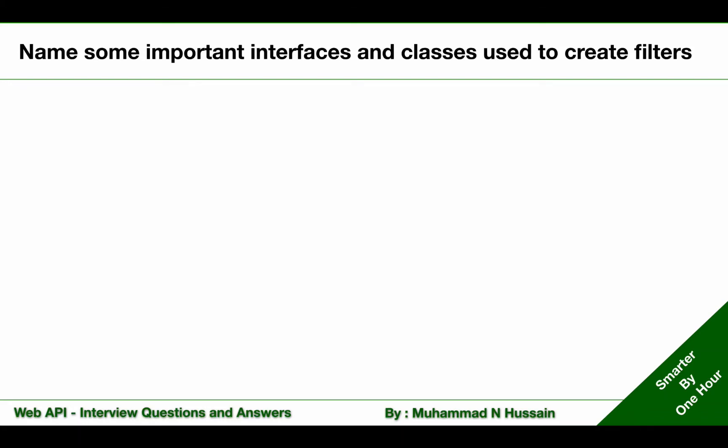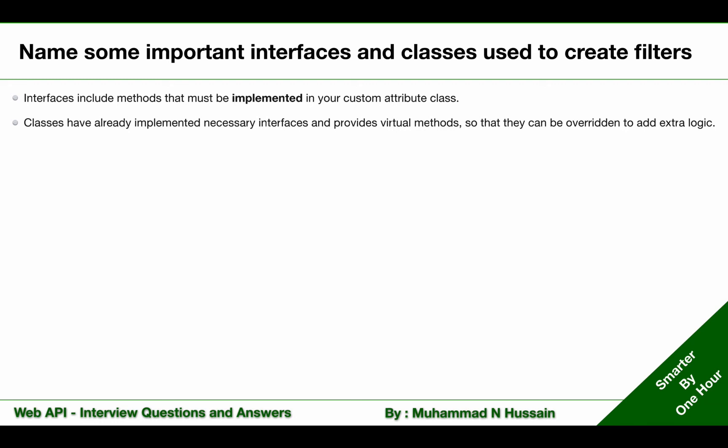The filters namespace contains interfaces and classes which we can use to create custom filters or attributes. These interfaces include methods that must be implemented in your custom attribute class, whereas the classes have already implemented necessary interfaces and provide virtual methods so that they can be overridden to add extra logic. Here are the important interfaces and classes that can be used to create Web API filters.